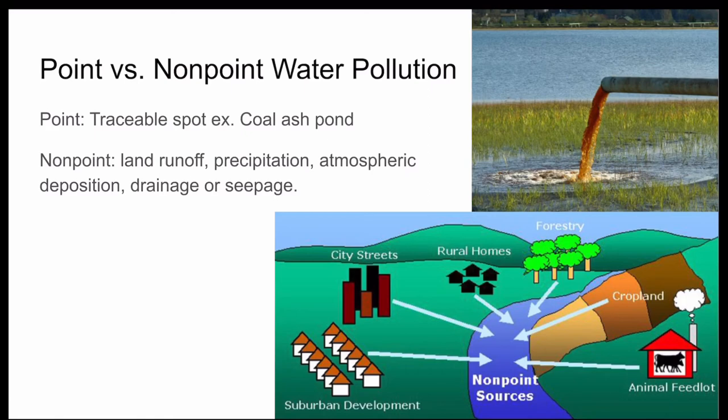However, in most cases it's difficult to identify exactly where the pollution comes from. In fact, 96% of polluted water in the United States comes from non-point sources. For example, runoff can take oil, gas, feces, pesticides, fertilizers, and soils from farms, roads, and residential lawns. Compared to readily identifiable point sources, non-point pollution is difficult to regulate since it is so diffuse.